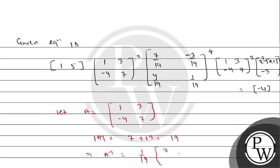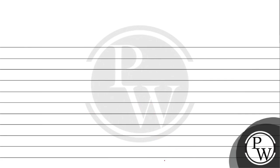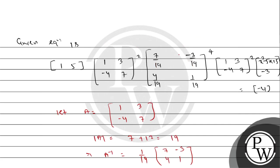Diagonal ko interchange: 7, 1. Non-diagonal: multiply by -1, giving -3 and +4. So A inverse equals [7/19, -3/19; 4/19, 1/19]. This is the inverse matrix.